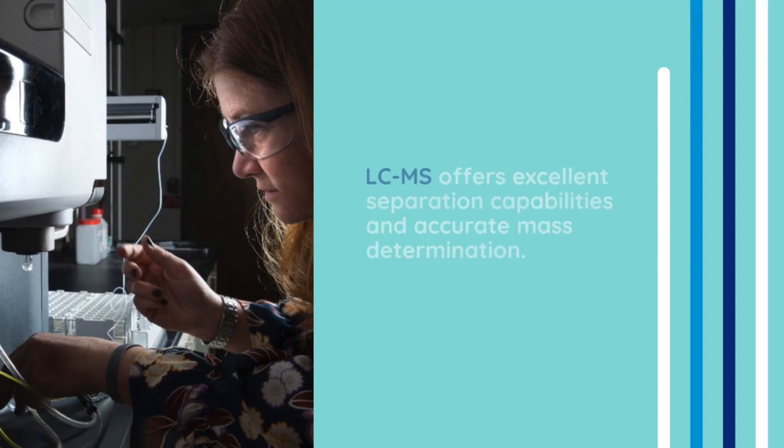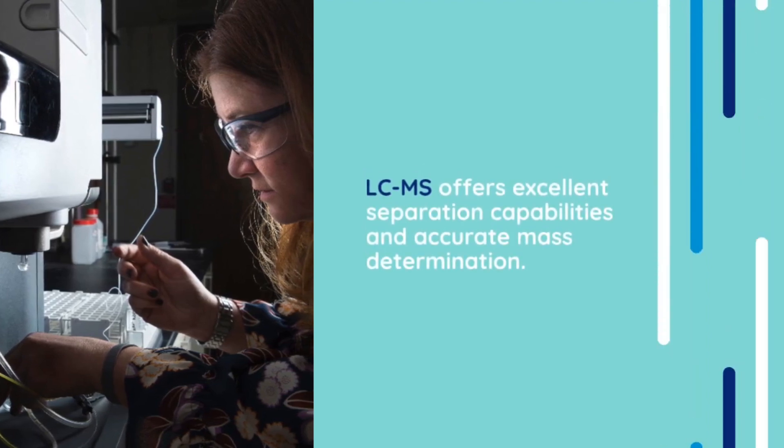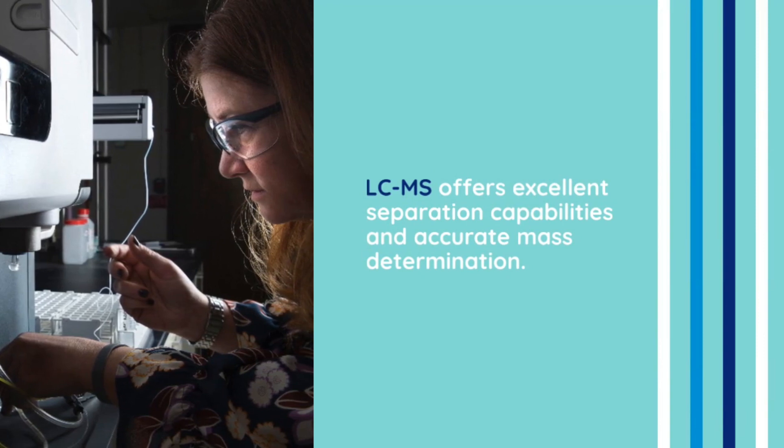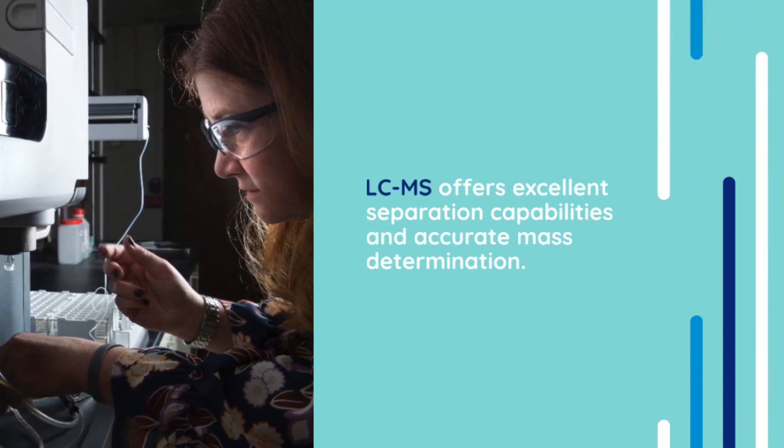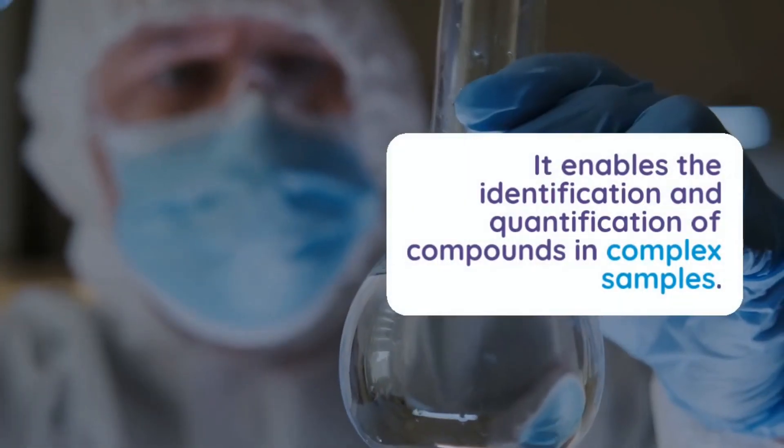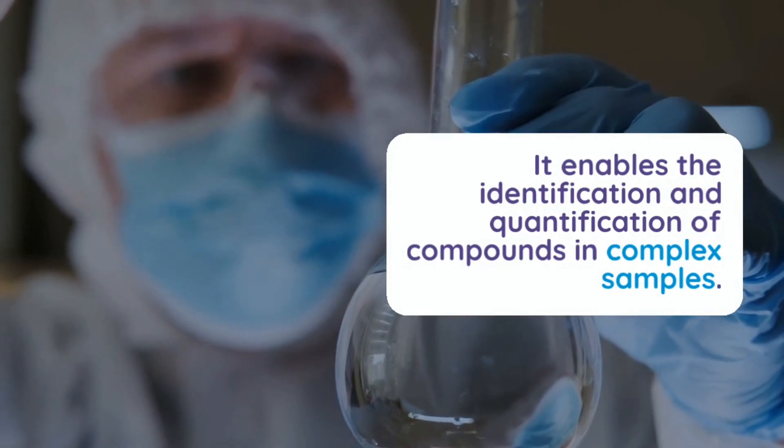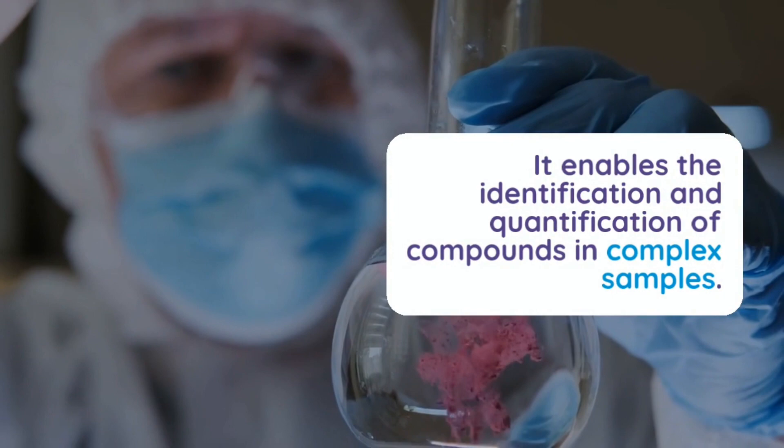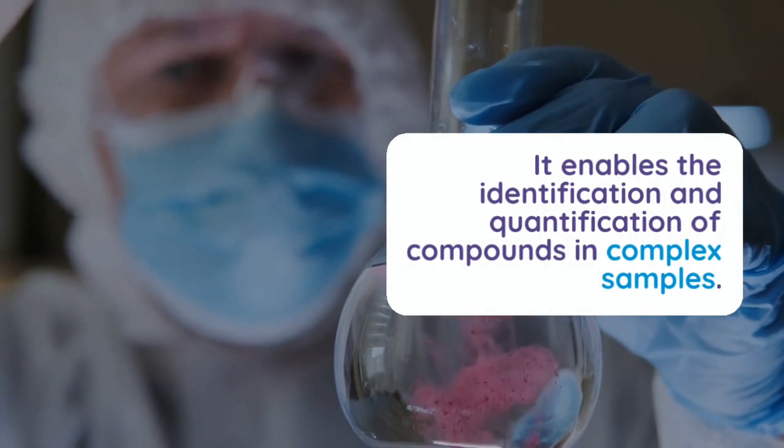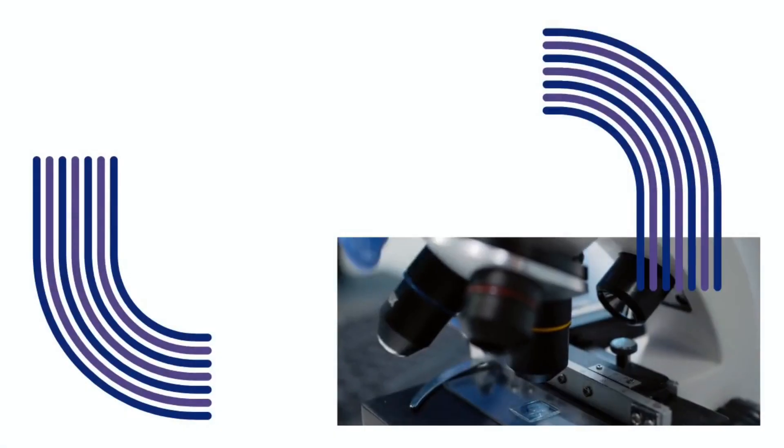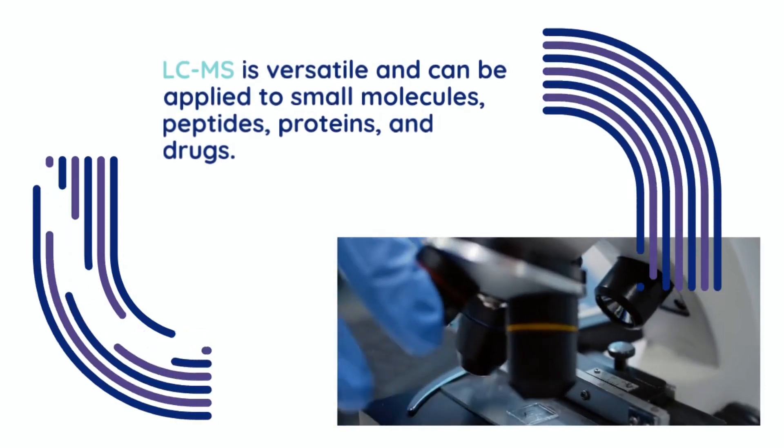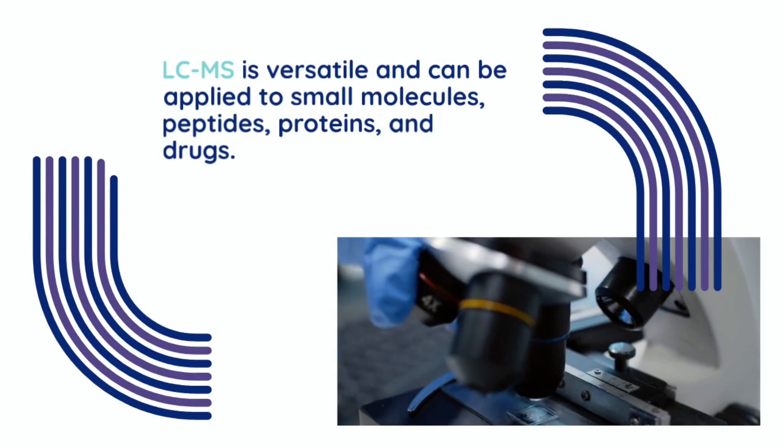The combination of liquid chromatography and mass spectrometry offers several advantages. LC-MS provides excellent separation capabilities, allowing the analysis of complex mixtures with high resolution and sensitivity. Mass spectrometry provides accurate mass determination and structural information of the separated analytes. Together, LC-MS enables the identification and quantification of a wide range of compounds in complex samples, even at low concentrations.